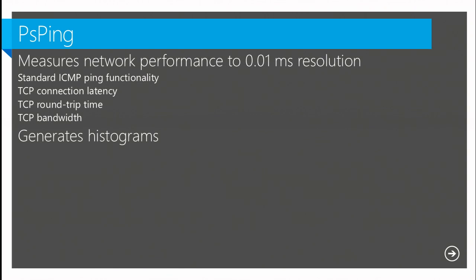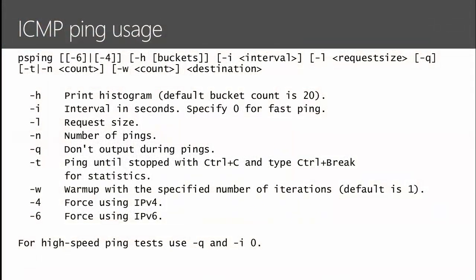PSPing shows network performance to one-hundredth of a millisecond resolution. It has standard ICMP ping functionality, and can also do TCP connection latency, TCP round-trip time, TCP bandwidth, and can generate histograms. The usage is much like the built-in ping. You specify where you want to test and it starts doing the ICMP thing and tries to get a response back. There are options including setting the interval — instead of pinging once per second you can change it or set no interval at all.